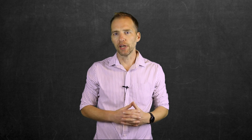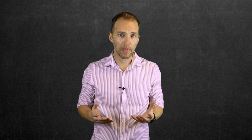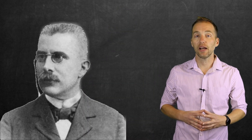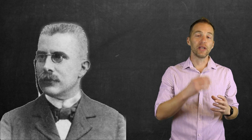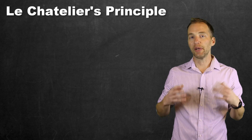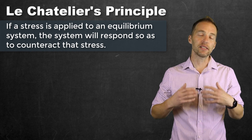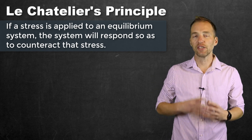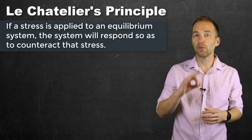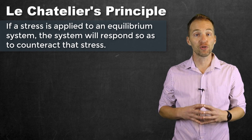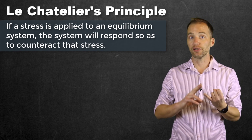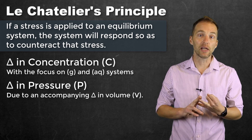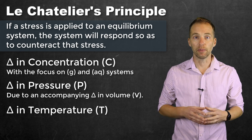What if we have a system already at equilibrium, but one of the conditions under which that equilibrium exists changes? Thanks to Henri-Louis Le Chatelier, we can answer that question. Le Chatelier's principle states that if a stress is placed on a system at equilibrium, the system will respond to counteract that stress. In introductory chemistry, we look at three stresses: a change in concentration, a change in pressure due to a change in volume, and a change in temperature.